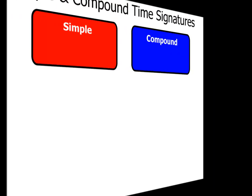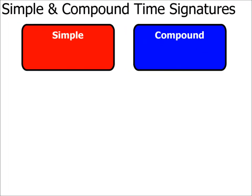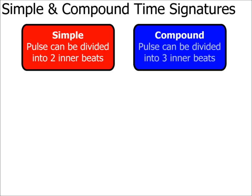Let's look at the difference between simple and compound time signatures first. All time signatures can be referred to as either simple or compound. Simple meaning that the pulse can be divided equally into two inner beats, whereas compound time is when the pulse is divided equally into three inner beats.